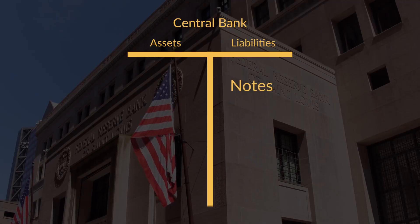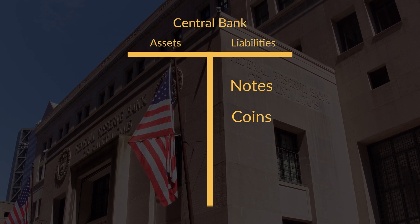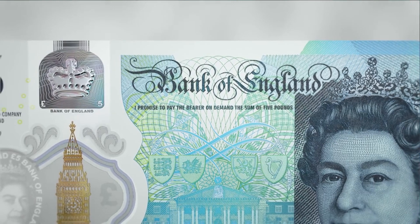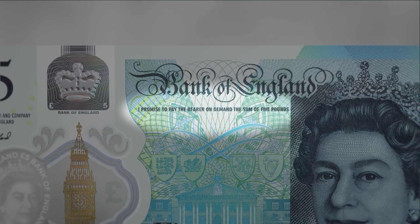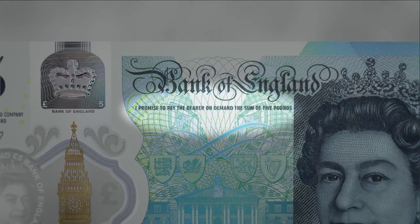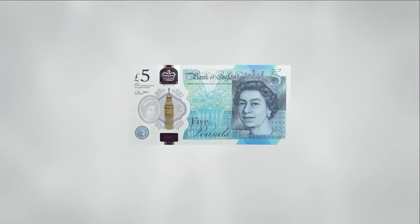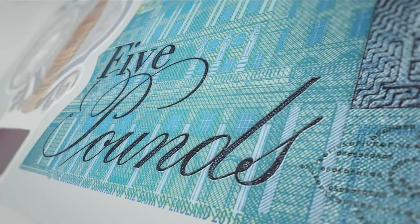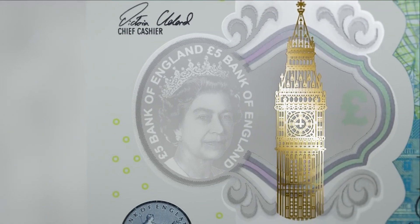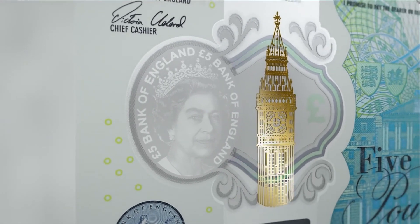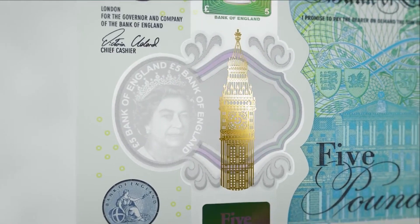When a central bank prints notes or mints coins, it will consider these a liability — in other words, a claim on the central bank. Some notes, like the British pound, are very explicit about this. On a five-pound note, you will find written: 'I promise to pay the bearer on demand the sum of five pounds,' signed by the governor of the Bank of England. So that is clearly a liability for the Bank of England, but a rather strange one. The central bank is in a unique position in that it produces the ultimate form of money, and therefore will pay you with just another five-pound note. In practice, this doesn't really mean much, but it is consistent with the fact that central banks see this newly printed money as a liability.